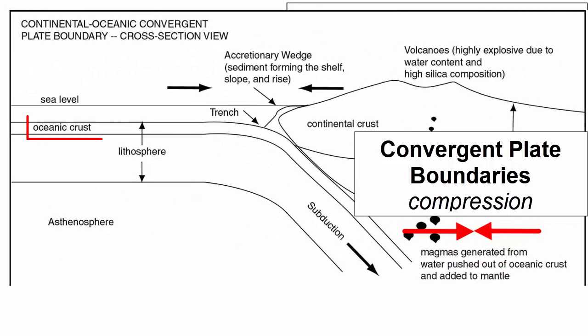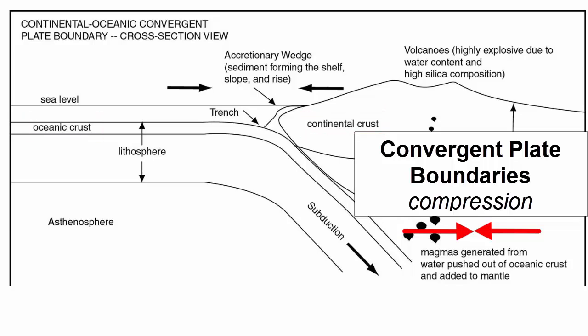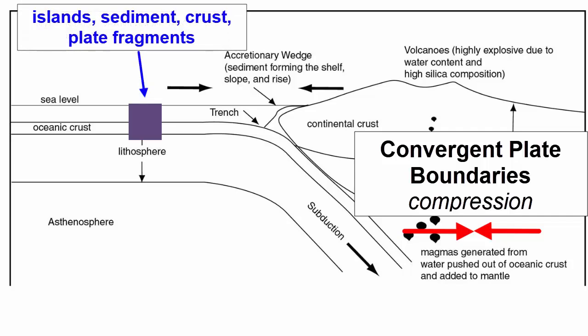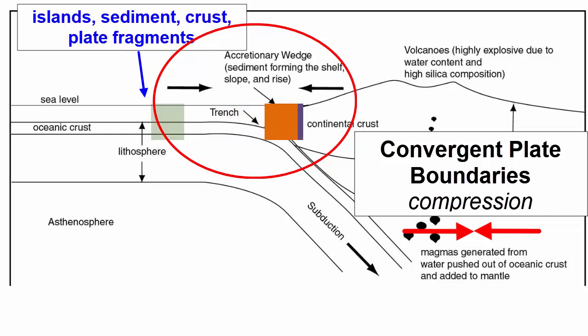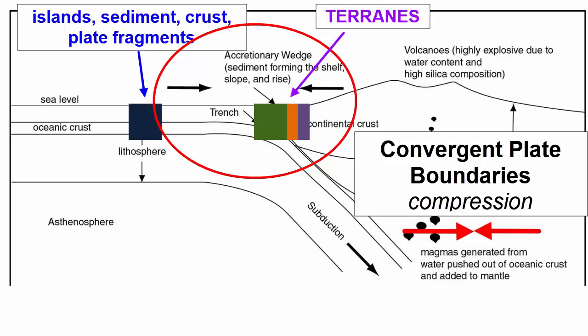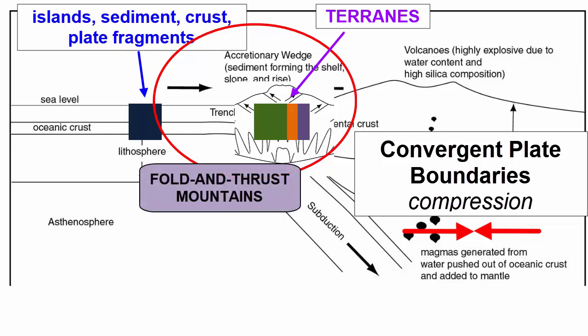When the leading edge of one converging plate consists of oceanic crust and the other continental crust, the plate with the ocean crust subducts or sinks beneath the plate with the continental crust, because ocean plate is denser. Material atop the subducting plate, such as islands, sediment, or the crust itself, can get scraped off and accreted to the edge of the continental plate in the zone between the trench and the volcanic arc. These accreted elements, called terrains, are squeezed up against the continent, which gets thicker here, with folds at depth and faults at the surface. The faults that form from compression are called reverse faults, or if very low angle, thrust faults — hence the name fold and thrust mountains.